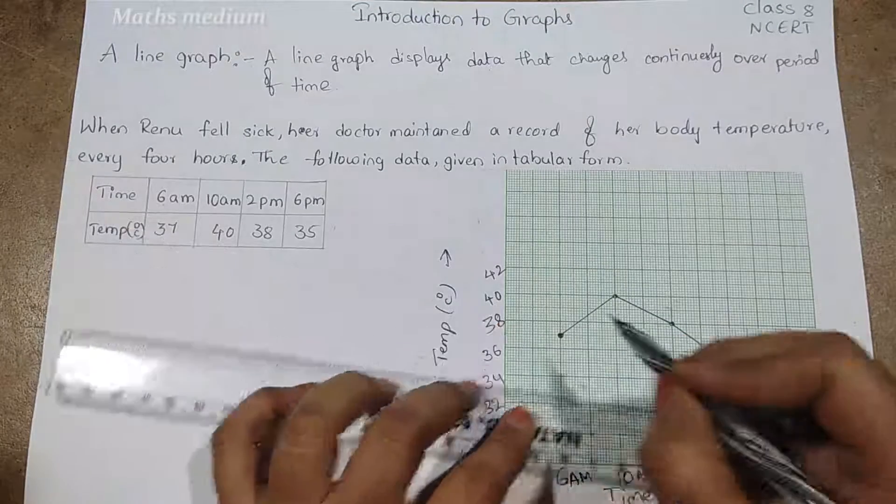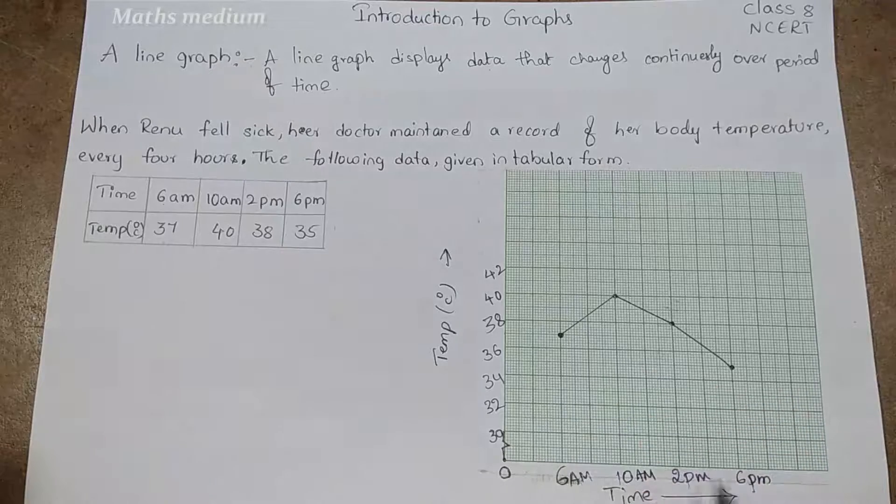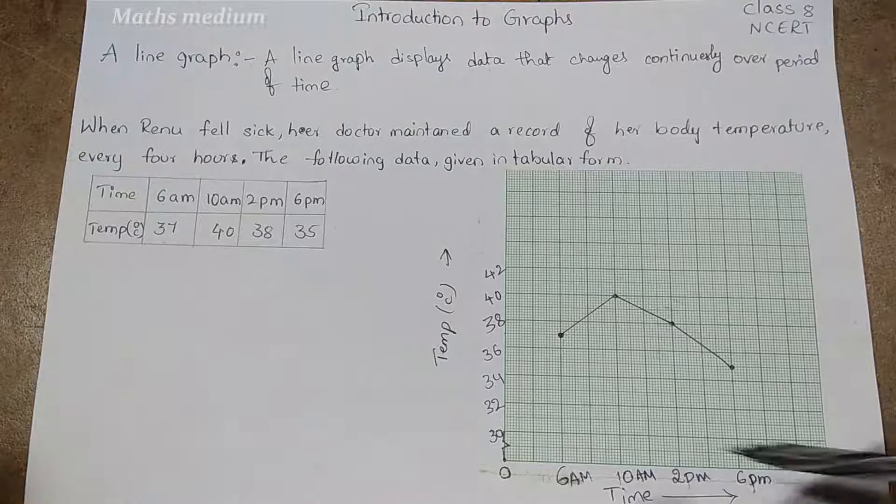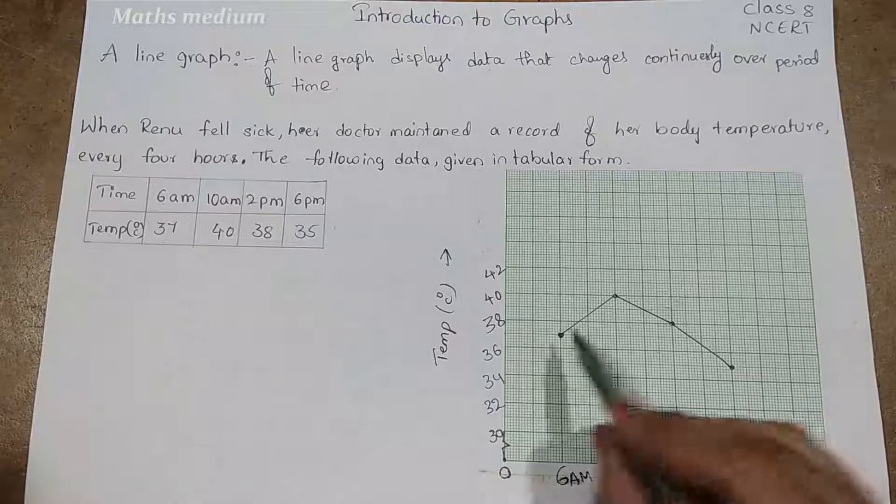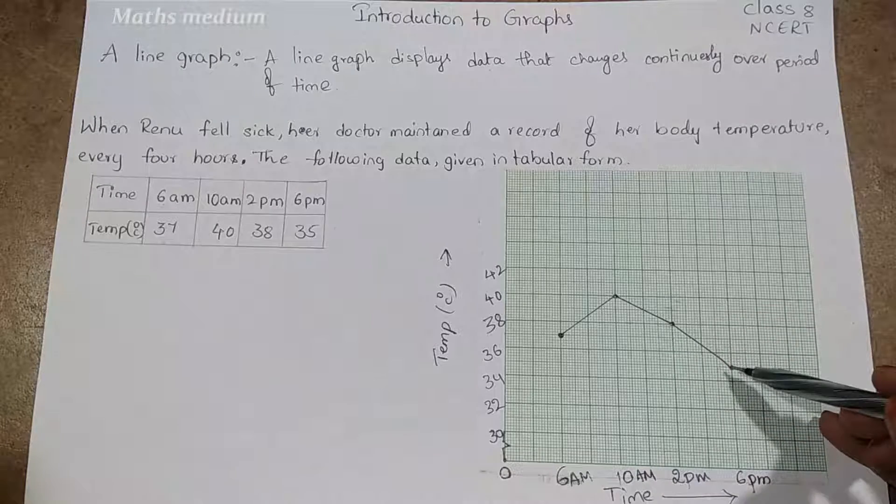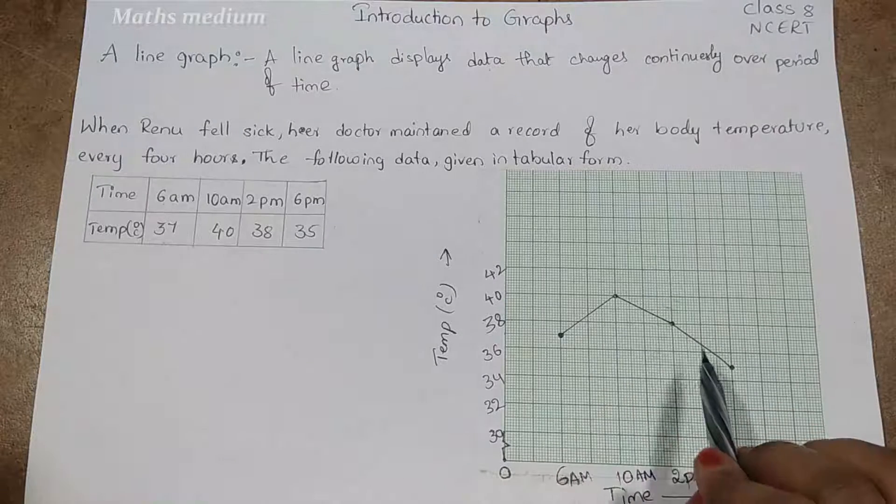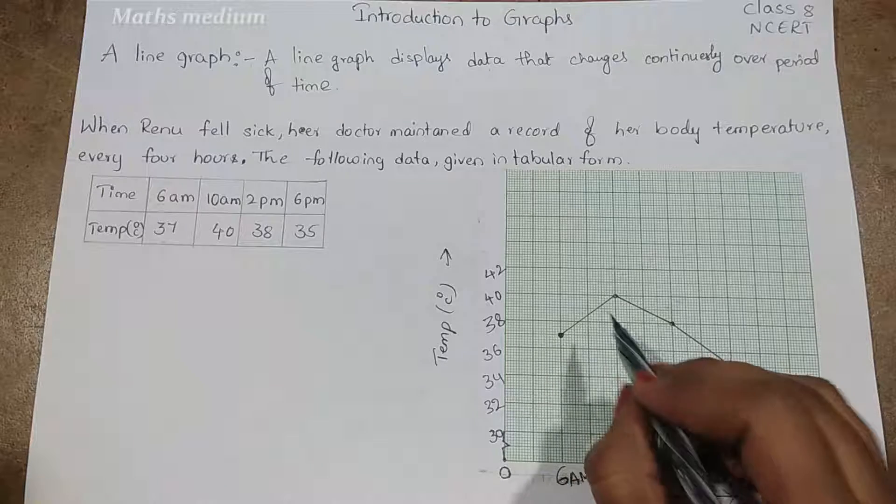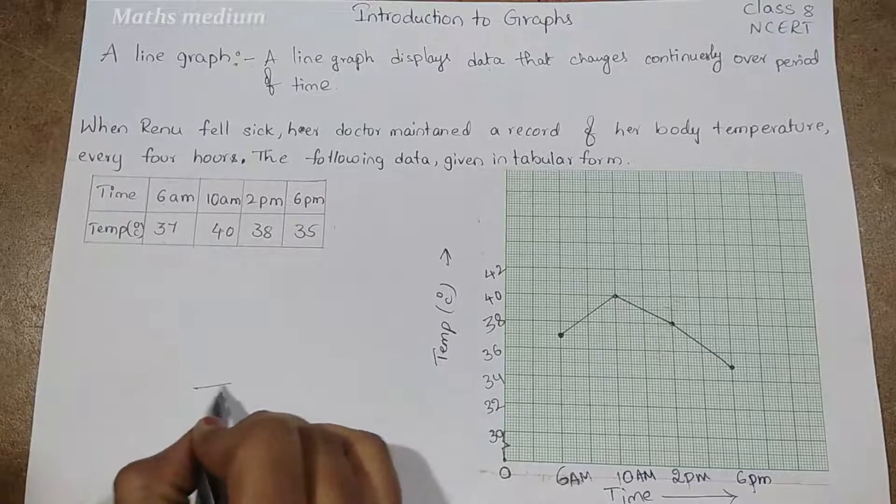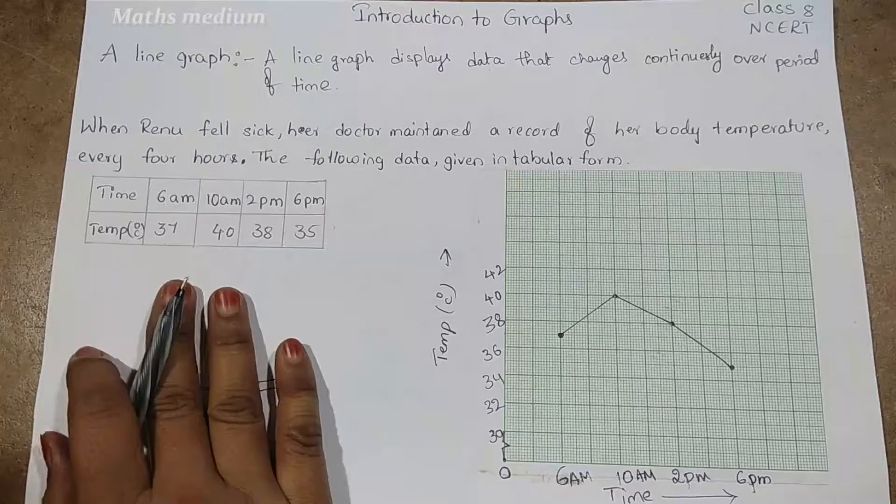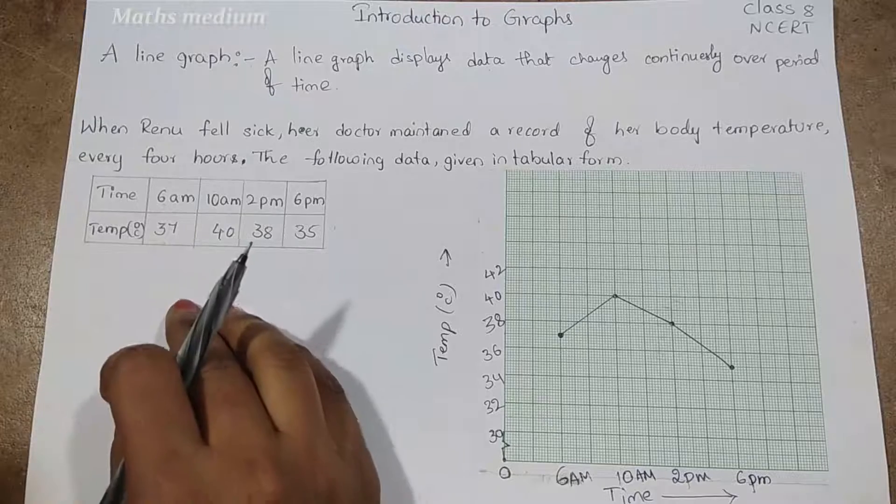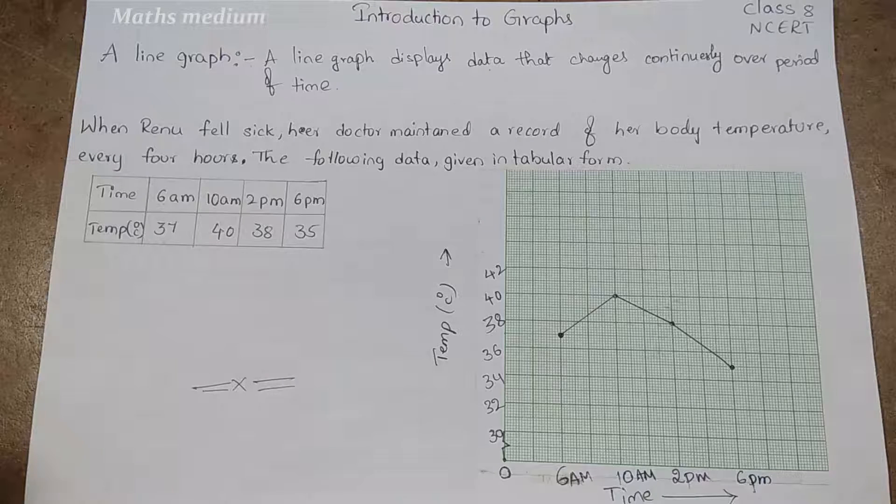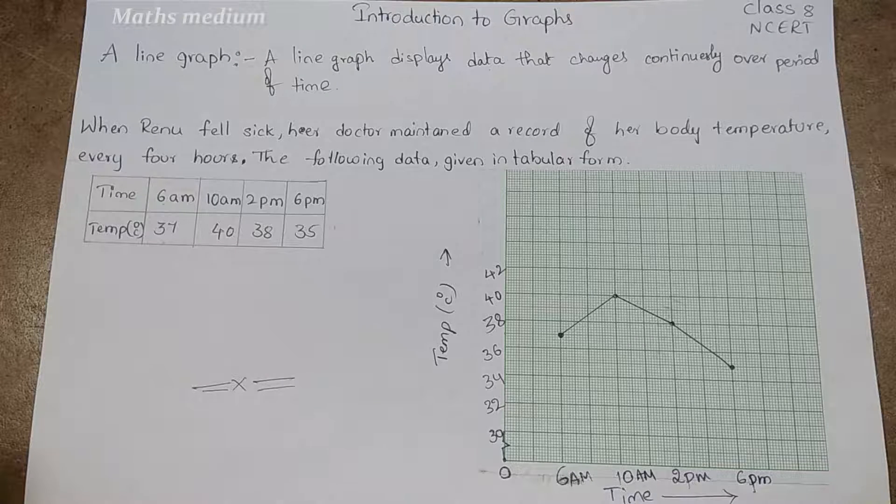We cannot connect this to this and this to this because this is a line graph with a series. This is 6 am, this is 10, 2, and 6. This is from starting and next one and next one—this is the last one. So in that way we have to connect the line graph. This is the way to make a line graph with how to put points also. I hope you understand about this session. By using this line graph and this data, we can answer any questions. If you have any doubts, comment on comment section. Please click like button, share my videos, and subscribe my channel. Thank you.